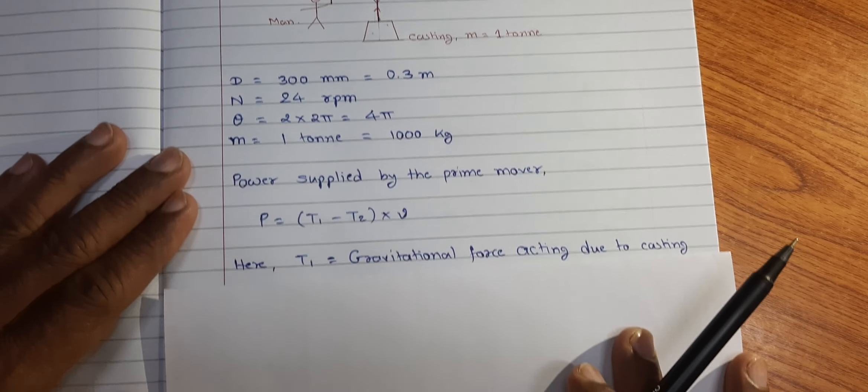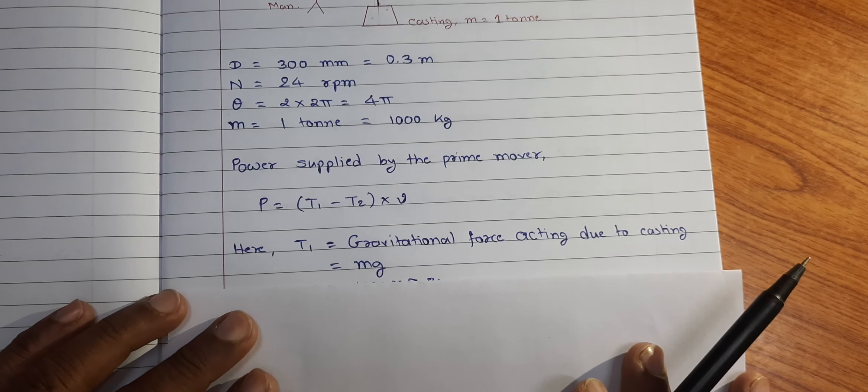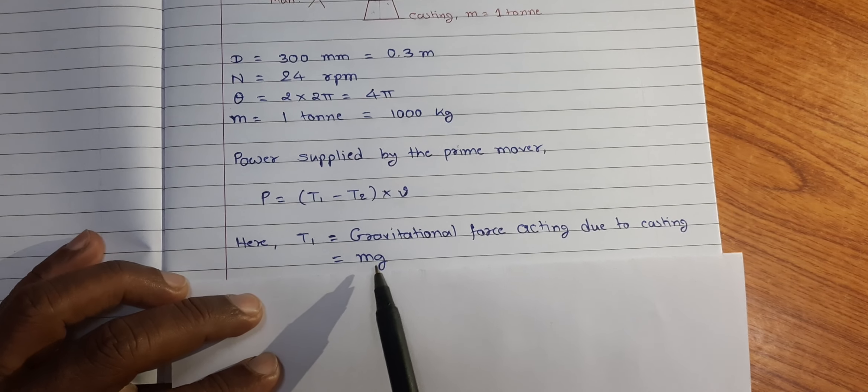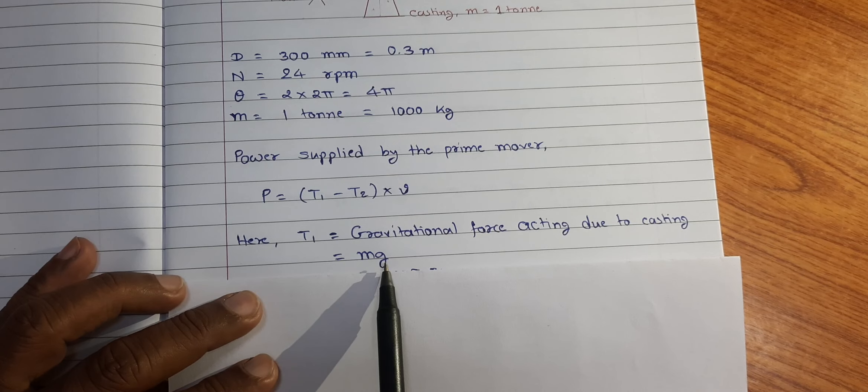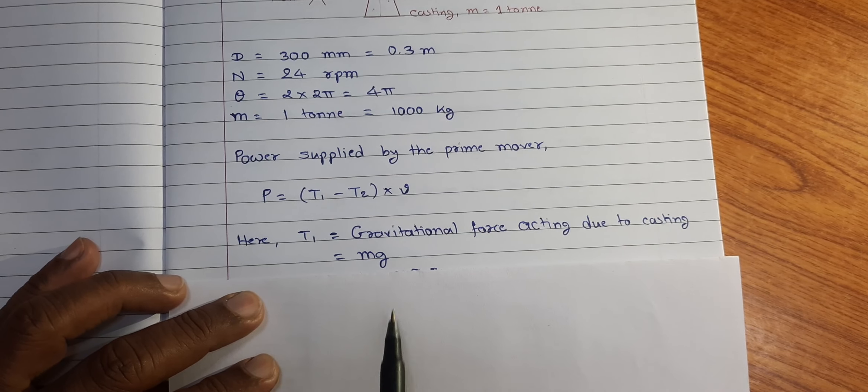We can write T1 is equal to m into g. m is the mass of casting and g is the gravitational coefficient.